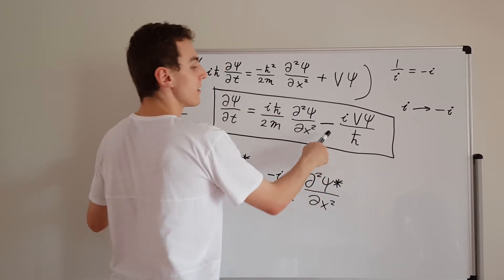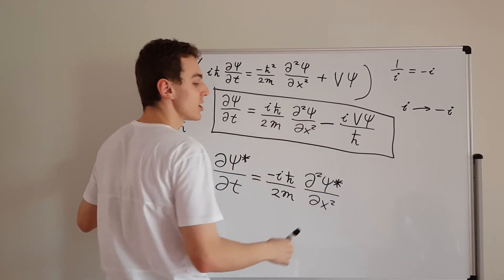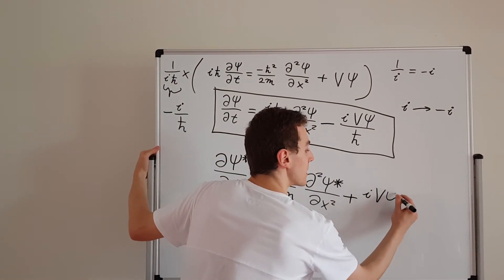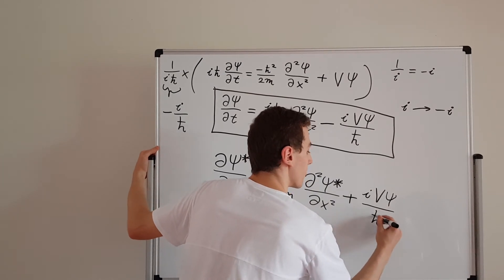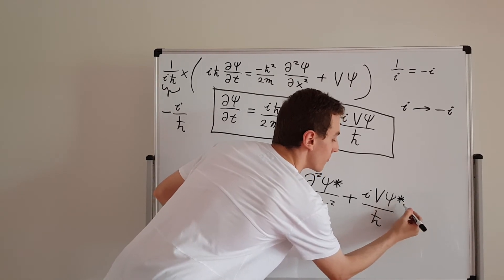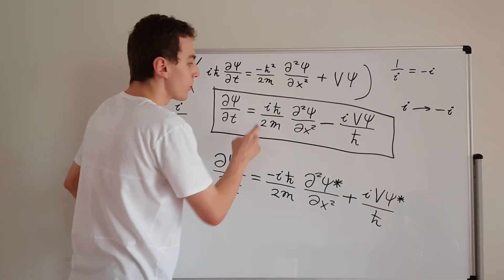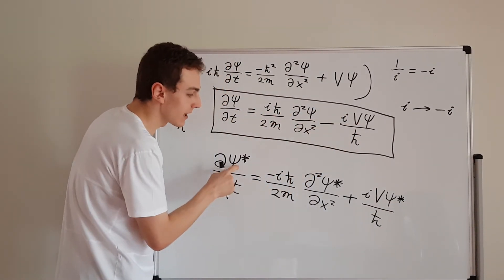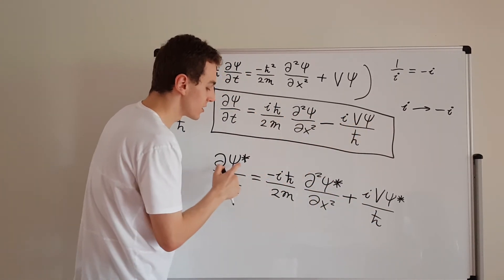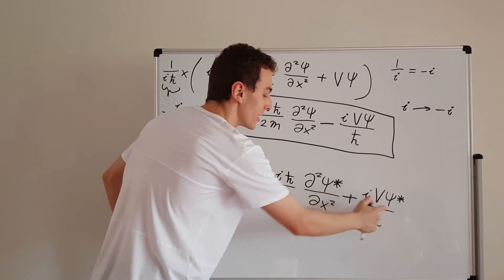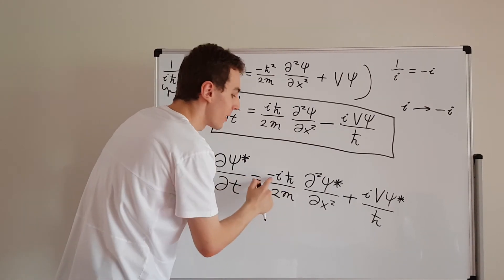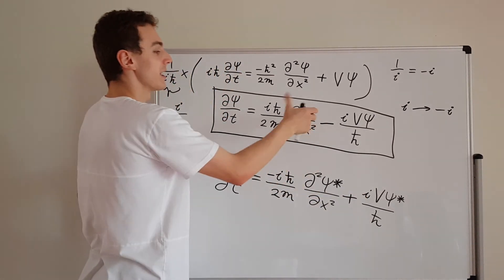Finally, the minus sign associated with the i in the potential term has to change to a plus sign, giving us plus i V psi star over h-bar. So we've conjugated everything: everywhere we see psi we now have psi star — there are three places where psi appears and three places where psi star appears. Everywhere we see an i we've turned it to a minus i, and the minus i and i have swapped signs.